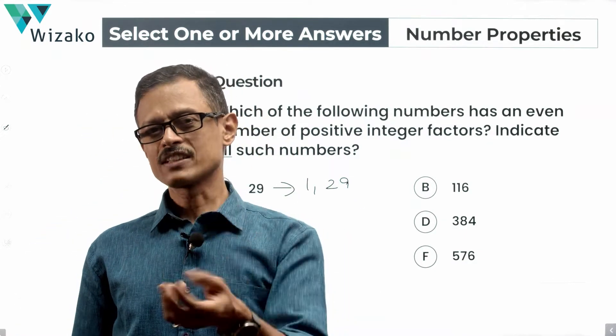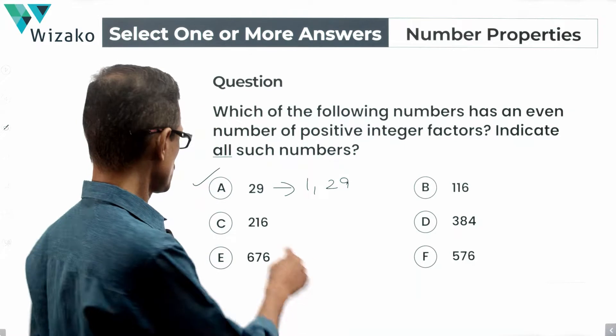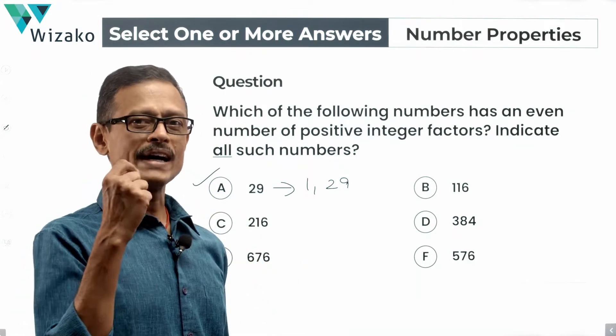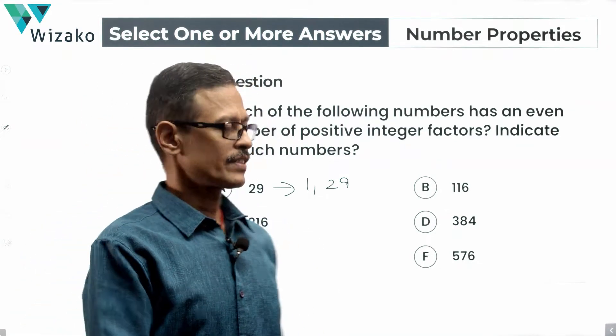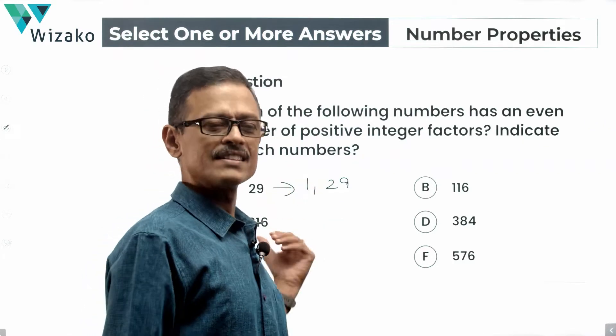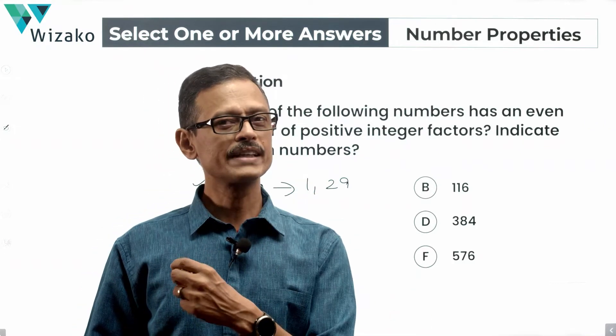Next slide or the slide after that, when you're actually solving it, I'll do it for 216. You'll realize why this method is cumbersome. For something like 29, it's very easy. Something like 216, 384, it could get a little cumbersome.